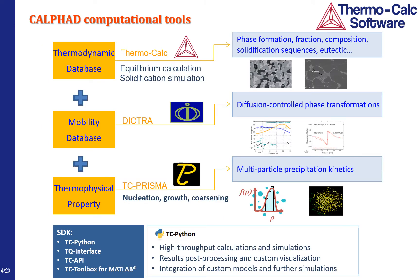CALPHAD calculations rely on not only the databases, but also computational tools. We have software for equilibrium calculation and solidification simulation. DICTRA is used to simulate diffusion-controlled phase transformations. PRISMA can be used for simulating concurrent nucleation, growth, and coarsening in multi-particle precipitation. We also have several software development interfaces, especially TC-Python.